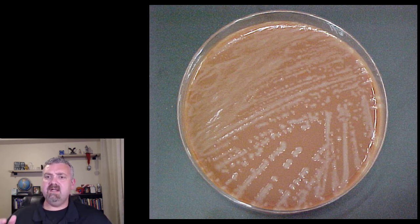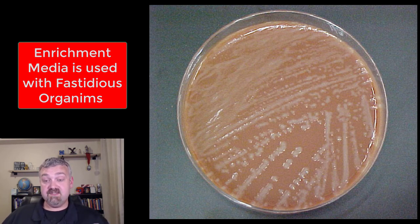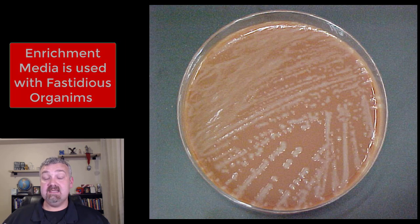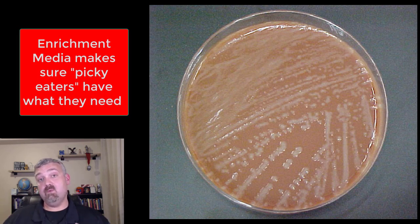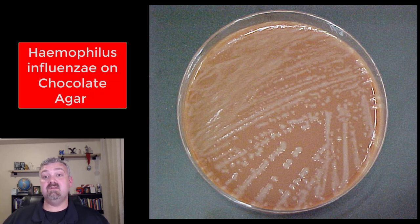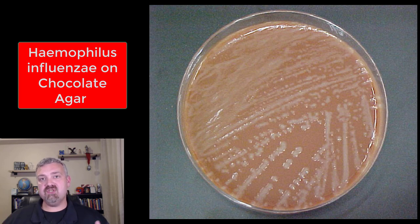What you're looking at here is an example of an enriched or enrichment media. When you have organisms that are fastidious — these are organisms that need essential nutrients added or they won't grow, they won't survive — an enrichment media is designed to add exactly what something would need to survive. This would be an example of a fastidious organism: Haemophilus influenzae. It only grows in a special media called chocolate agar. No actual chocolate — I definitely don't want to eat this.